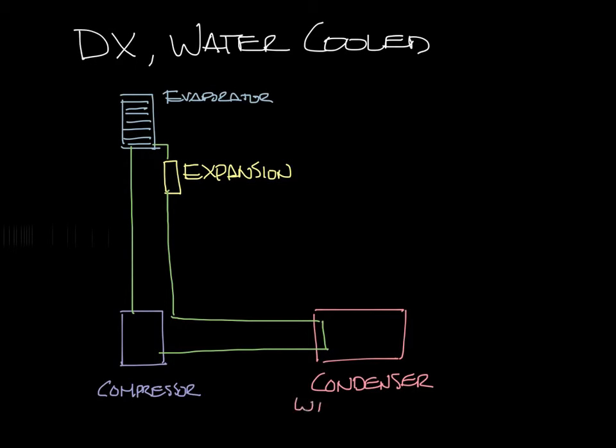But the condenser is water-cooled. Water flows through a water-cooled condenser, and the heat transfer happens between the refrigerant and the water. In our water-cooled condenser, the water enters the tubes cool. As the refrigerant vapor flows past the tubes, heat is transferred from the refrigerant to the water so that the water exits the condenser warm, and the refrigerant leaves as a liquid.